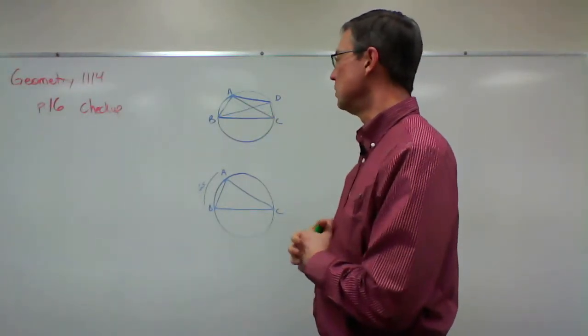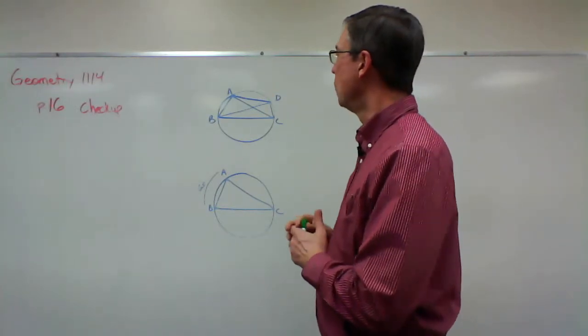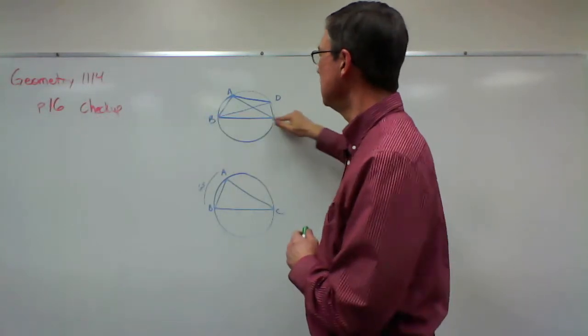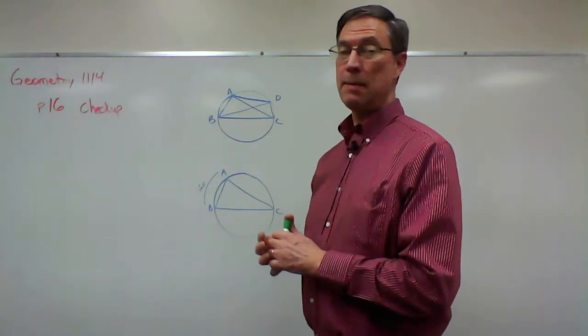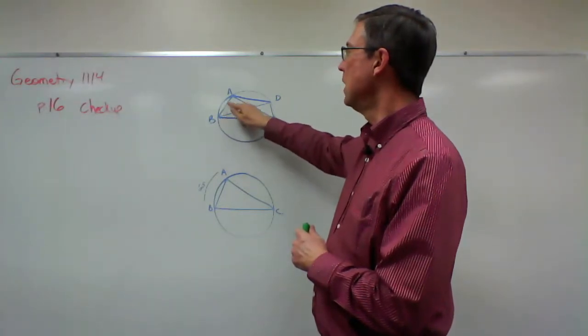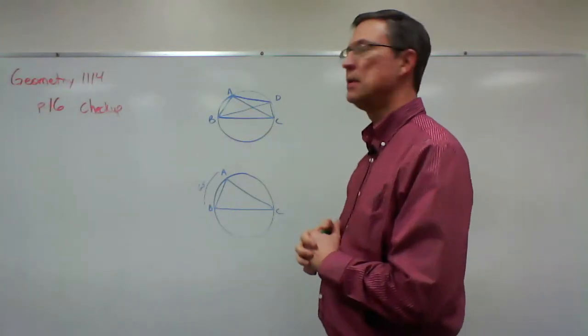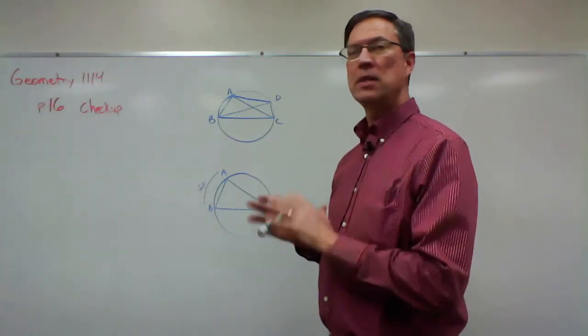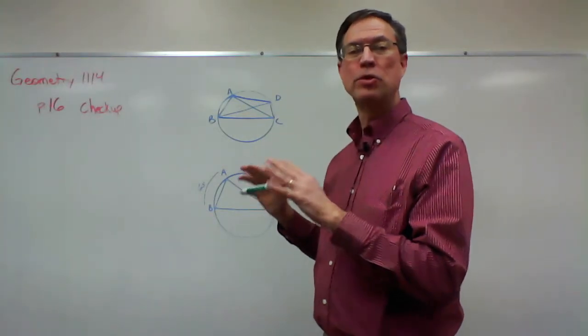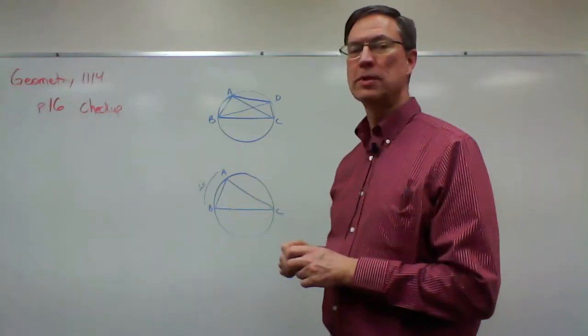Now in one of the questions that has a diagram like this, BC is a diameter of the circle and what would the measure of angle A or B, BAC, B? Angle BAC. Now you're not supposed to use your protractor to measure these angles. That's not supposed to be done at all. They give you enough clues, it's like a puzzle.